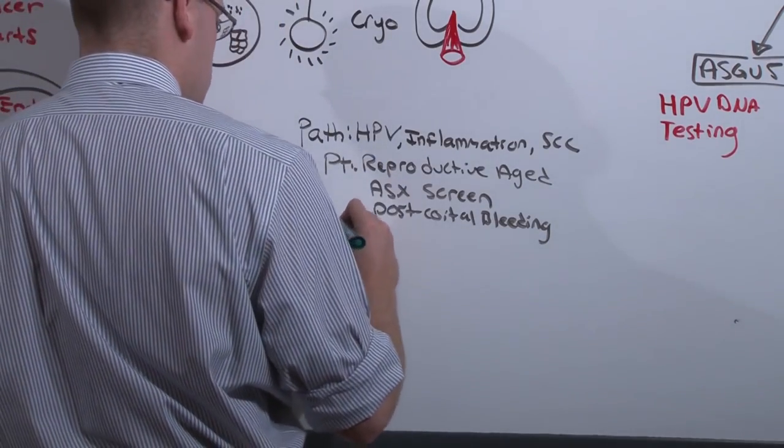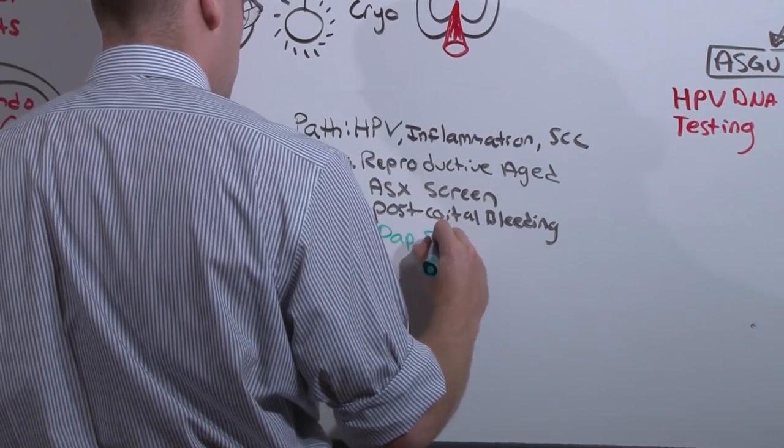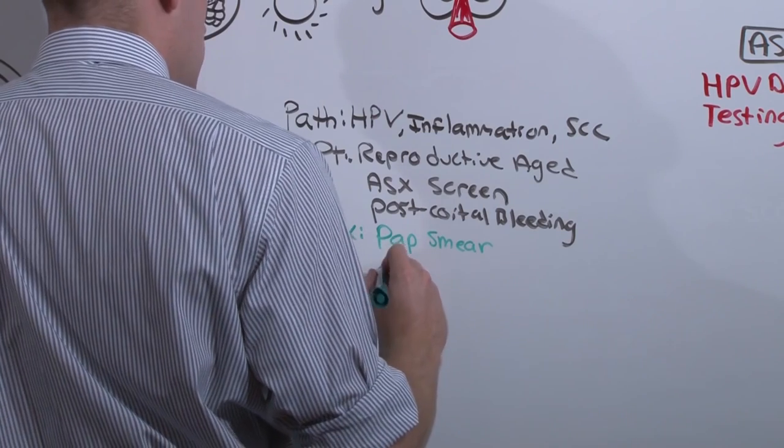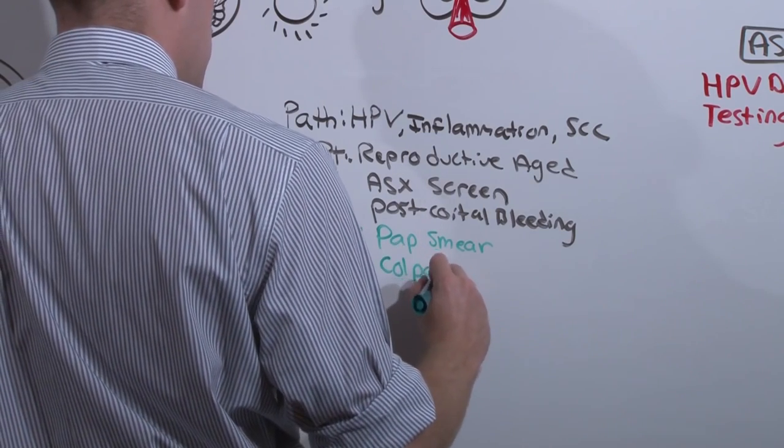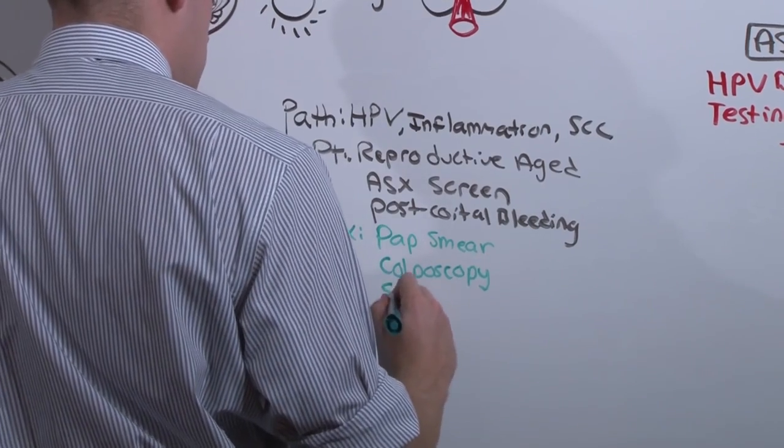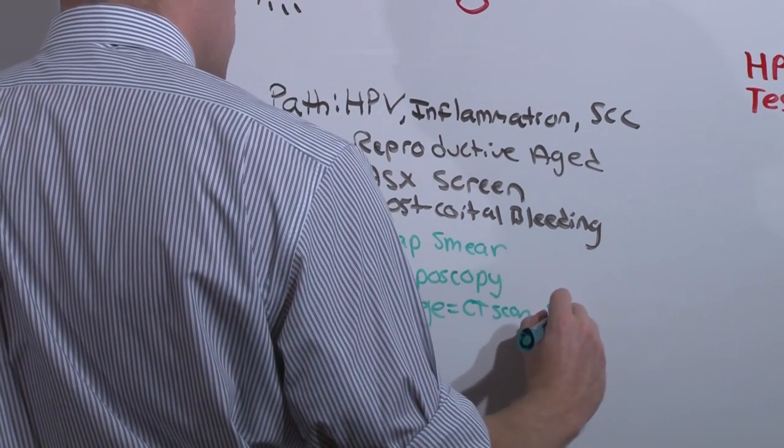You're going to diagnose the condition first with the pap smear. If that is abnormal, or there's a fungating mass, you can do a colposcopy. If there's cancer, you stage it with a CT scan or simply doing a physical exam.